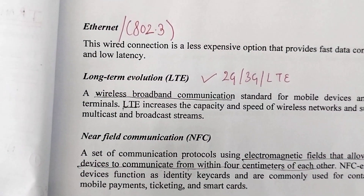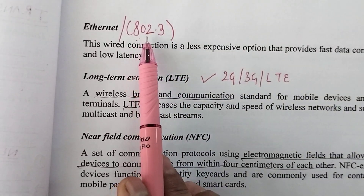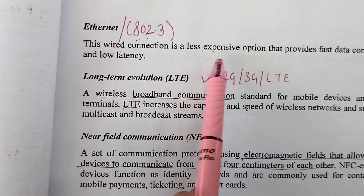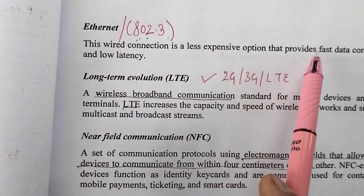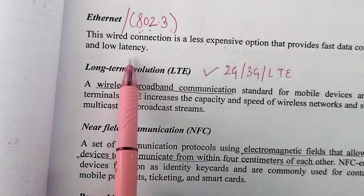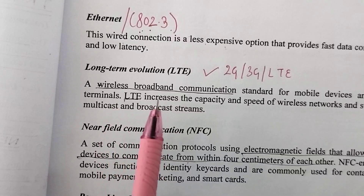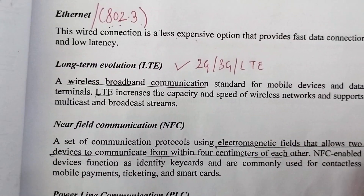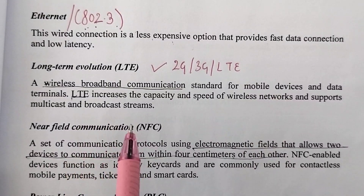Another protocol used in the link layer is Ethernet. The IEEE standard for Ethernet is 802.3. It is a wired connection, but it is very cheap or less expensive compared to other wired connections. It provides fast data connection and low latency, meaning very less delay in communication. Due to its lower cost, faster data connection, and low latency, it is preferred and more widely used.